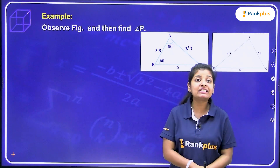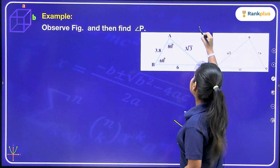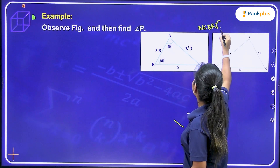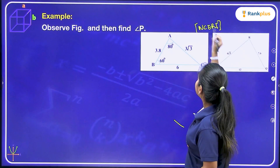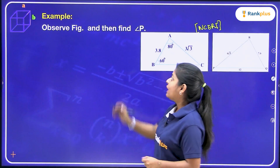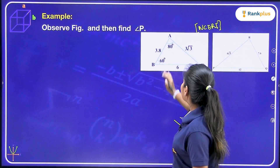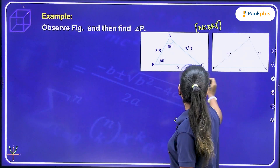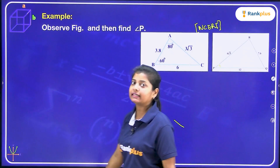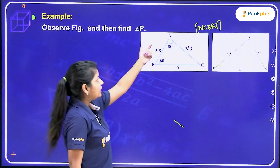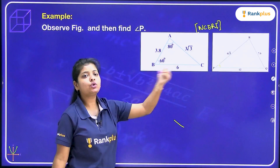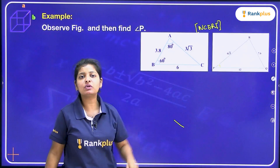Now we have a good question — it has been repeated many times in the exam. What is the question? Observe the two figures. You have to find angle P. These are two triangles given. If I take the ratio of the sides, it is almost the same.